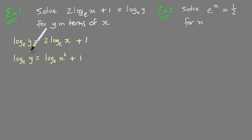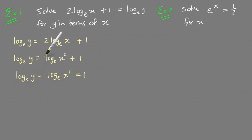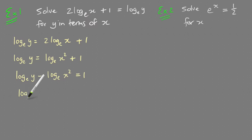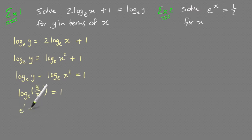Then I'm going to move this term to the other side: log_e(y) - log_e(x²) = 1. Using the log subtraction law — and you have to make sure the number is on the inside before you use that law — that becomes log_e(y/x²) = 1. From there, e to the power 1 equals what's in the bracket, so e¹ = y/x².